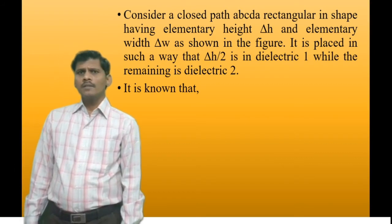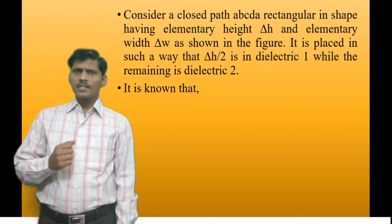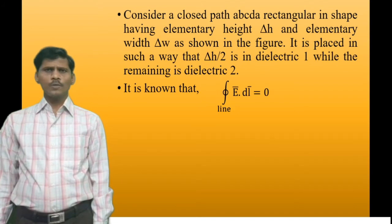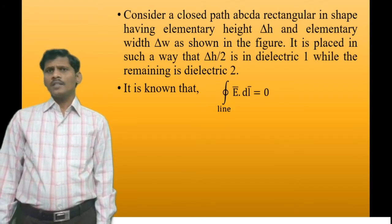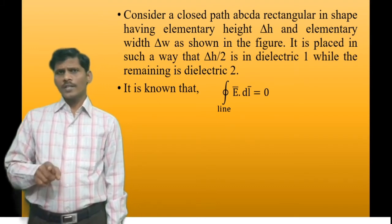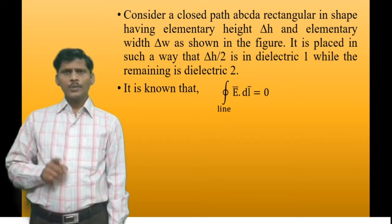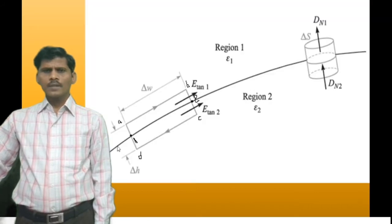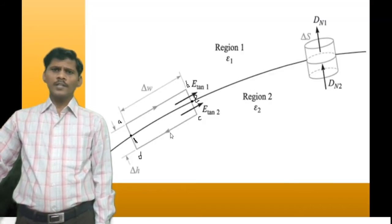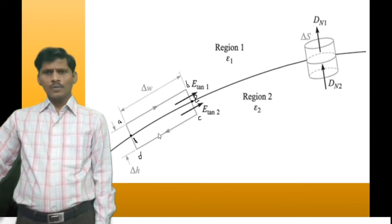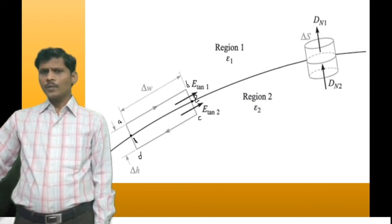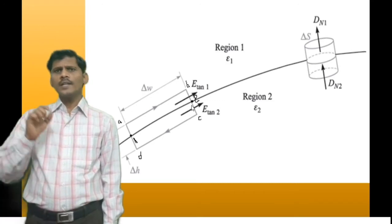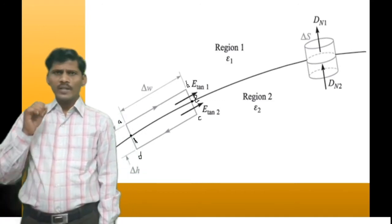We know that from the conservative nature of the electric field — one of Maxwell's equations — the closed line integral of E-bar dot dL-bar is equal to 0. The closed path is evaluated in the clockwise direction: A to B, B to C, C to D, and D to A. Half of the rectangular path is in region 1 and the remaining half is in region 2, separated by the boundary at points 1 and 2. The closed line integral can therefore be divided into 6 parts.